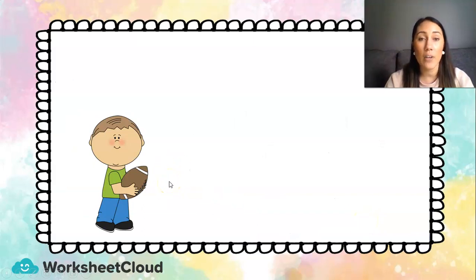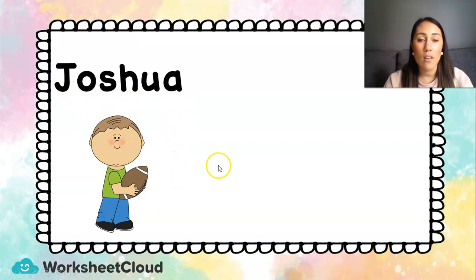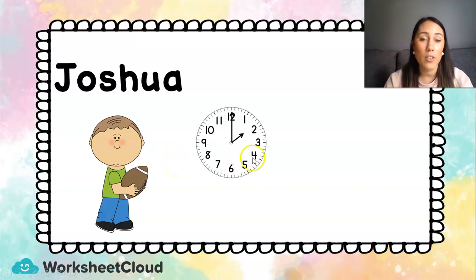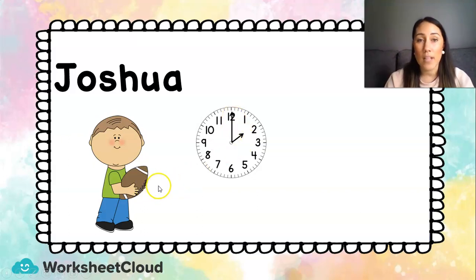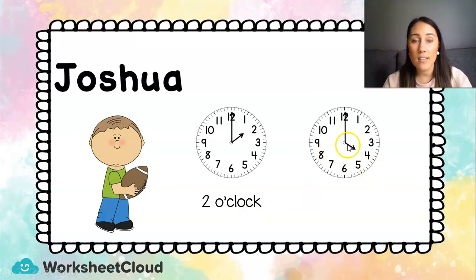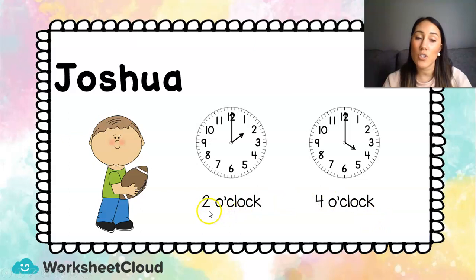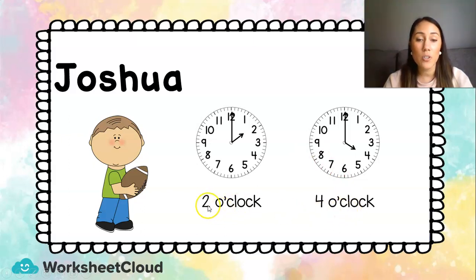Here is a little boy carrying a ball. His name is Joshua. Joshua goes to his rugby practice in the afternoon. The long hand is on the 12, so it is o'clock, and the short hand is on the 2 — so it is 2 o'clock. That is when his rugby practice starts. His rugby practice ends at 4 o'clock — the long hand is on the 12 and the short hand is on the 4. If his rugby practice starts at 2 o'clock and ends at 4 o'clock, how long was Joshua's rugby practice? From 2 till 4 is 2 hours. So yes, 2 hours have passed — that seems like a very long practice!